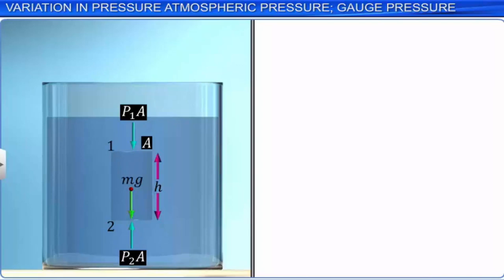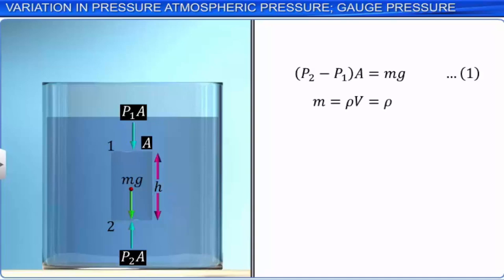The mass of the cylinder equals the product of its density rho, area A, and height H. Substituting this into the equilibrium equation, we get P₂ − P₁ = ρHg. Thus, the pressure exerted by a liquid column of height H is independent of the area of cross-section.